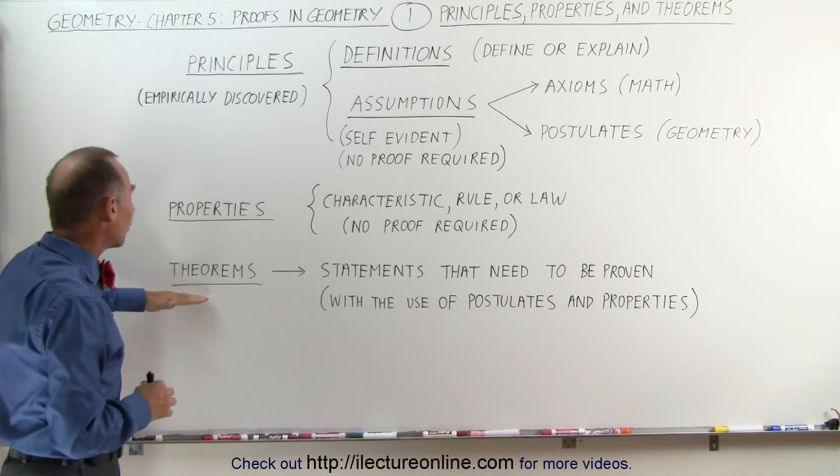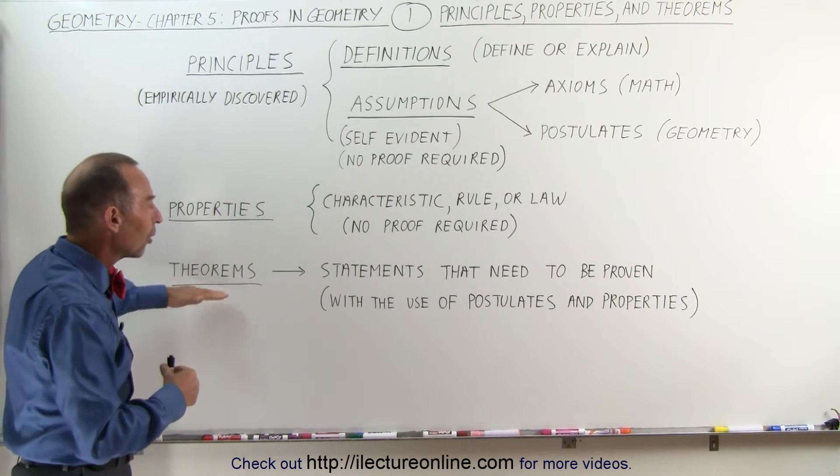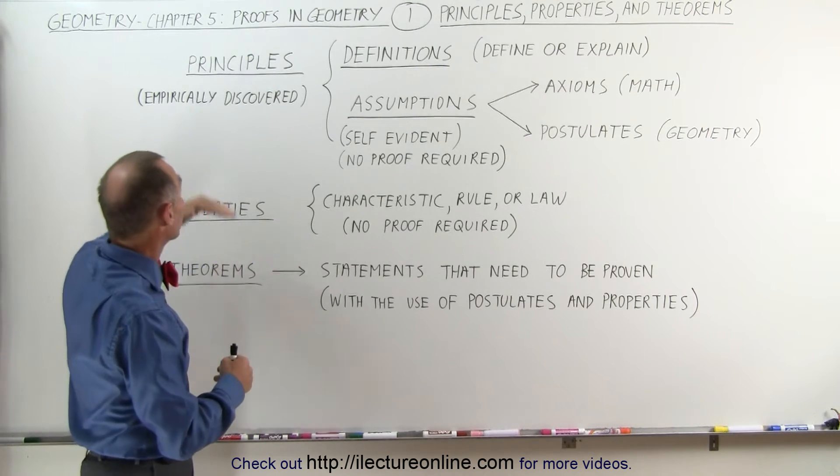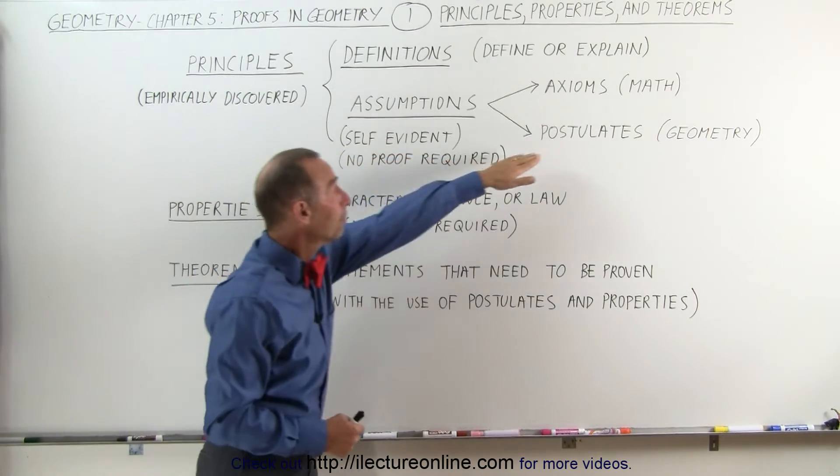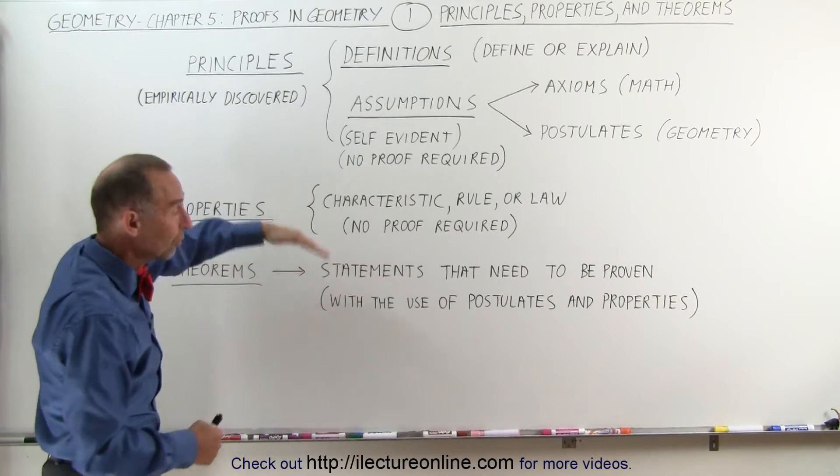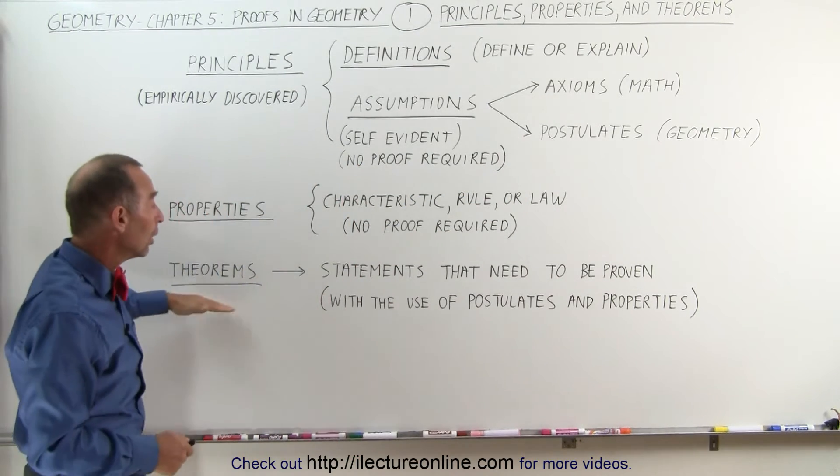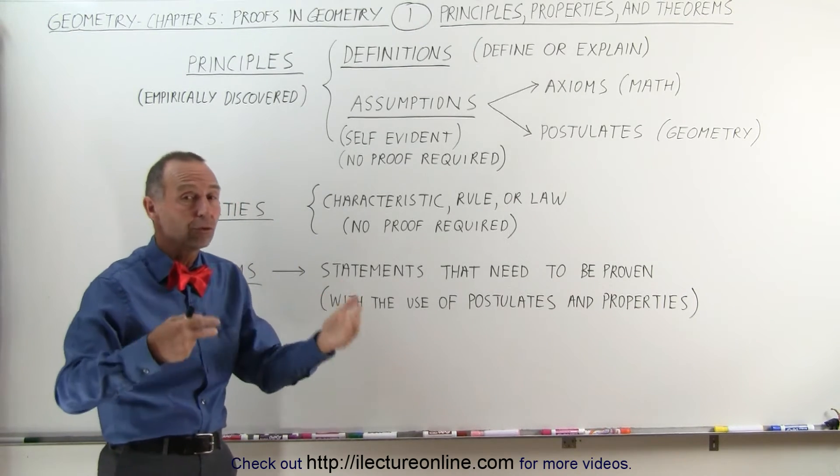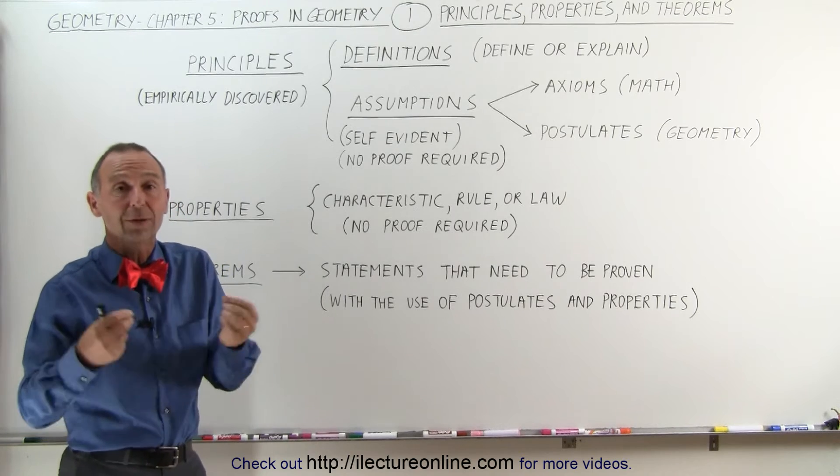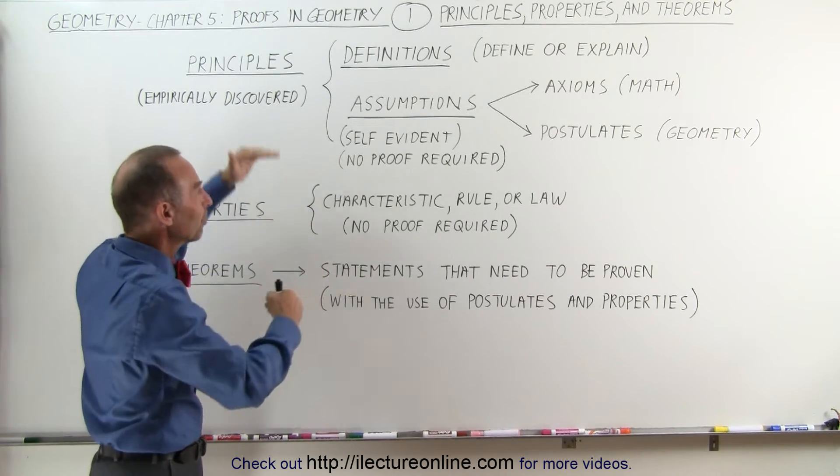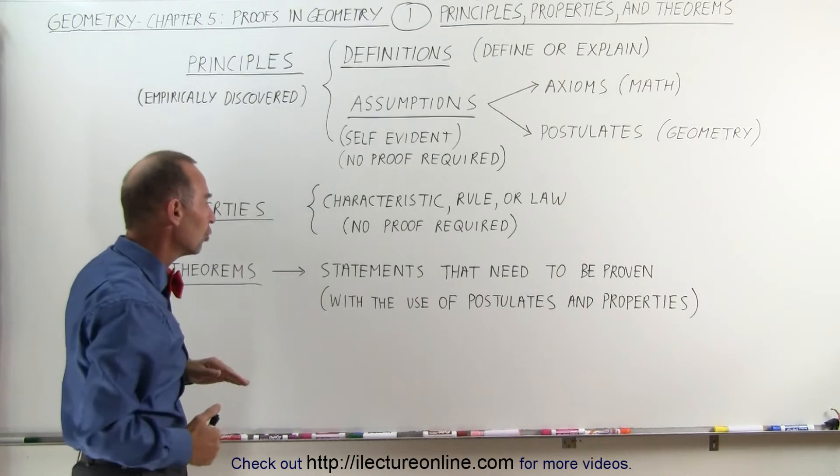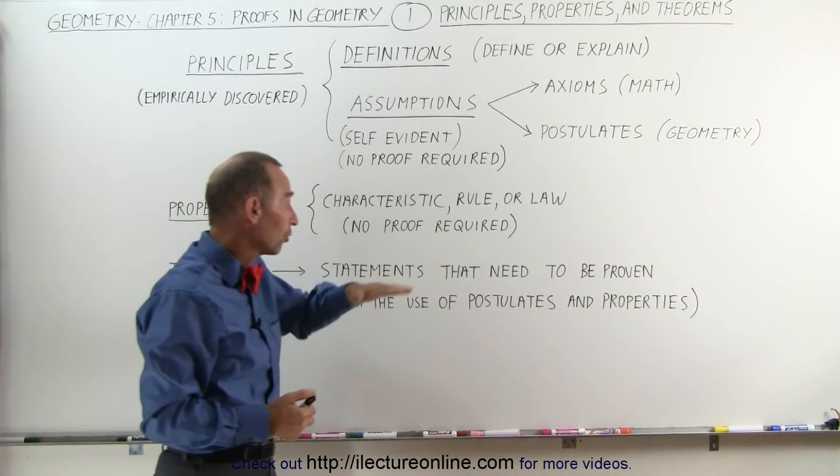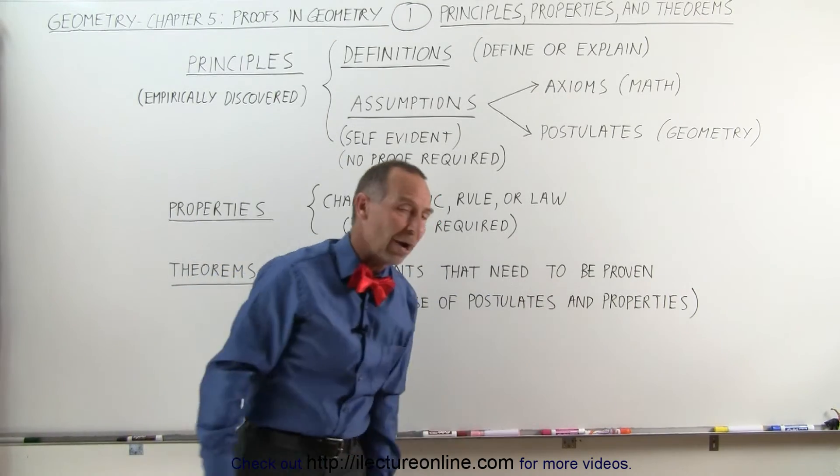The third category is actually theorems. Theorems are statements, and they need to be proven. And so, what we're going to do is we're going to use principles, primarily postulates and properties, characteristics about certain things, in order to prove certain comparisons. For example, we want to be able to prove that two triangles are congruent. Well, how do we do that? Well, we're going to use a certain set of these postulates and properties in order to do so. So, we then come up with a statement called a theorem, and we're going to prove those theorems with the use of postulates and properties.